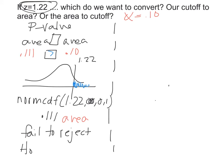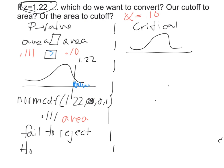For the critical value test, we do the reverse: we keep our information as a cutoff and convert the standard to a cutoff. Our alpha is 0.10 and this is a right-tailed test, so if this area in the right tail is 0.10, what is that cutoff value? There are two ways to describe it — area of 10% or the cutoff value — so on the critical value test we convert alpha and compare cutoffs with cutoffs.